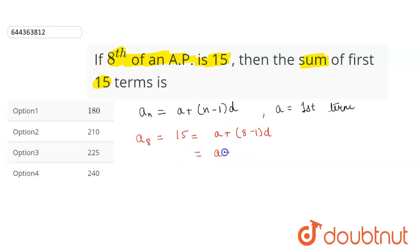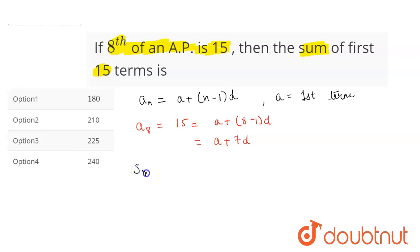This can be written as a plus 7d. Now the formula for sum of AP terms is equal to n divided by 2 into [2a plus (n minus 1) into d].